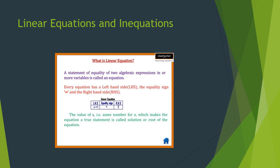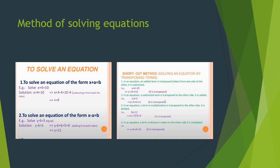Linear equations: a statement of equality of two algebraic expressions in one or more variables is called an equation. Every equation has a left-hand side, an equality sign, and a right-hand side. The value of x — that is, the number for x which makes the equation a true statement — is called the solution or root of the equation. To solve an equation, for example x plus 4 equals 10: subtracting 4 from both sides gives x plus 4 minus 4 equals 10 minus 4, so x equals 6.